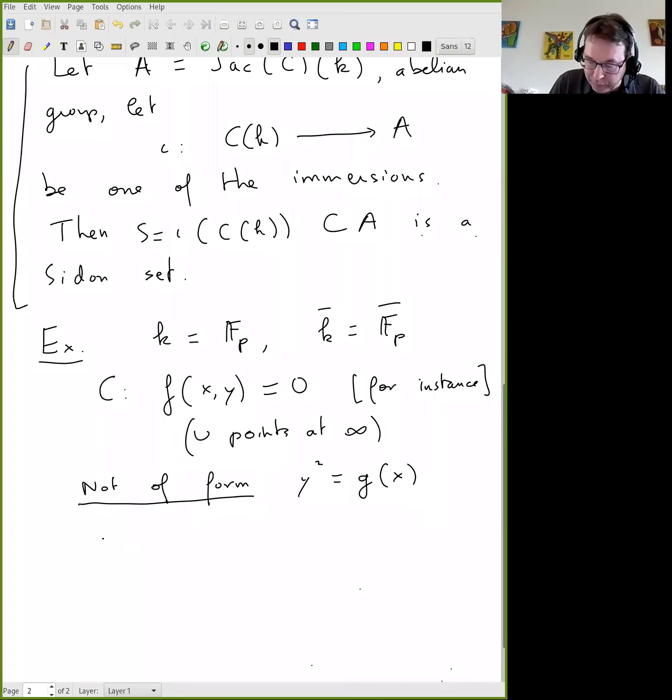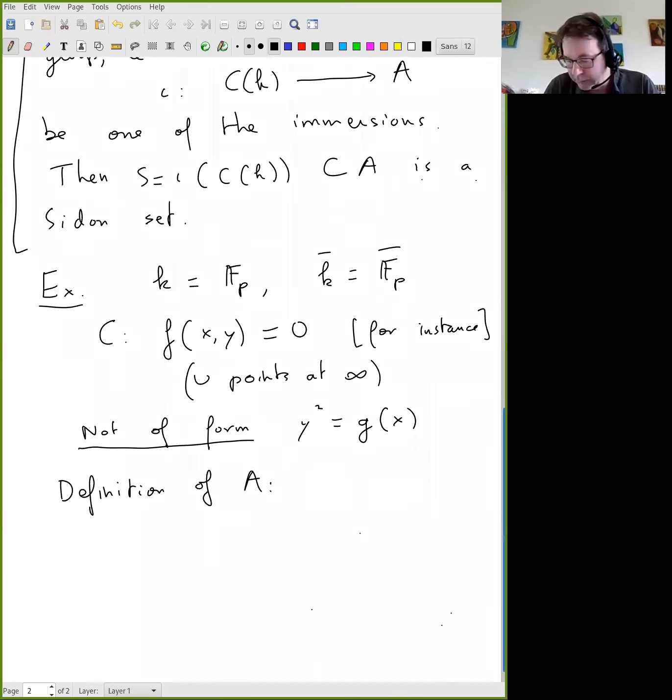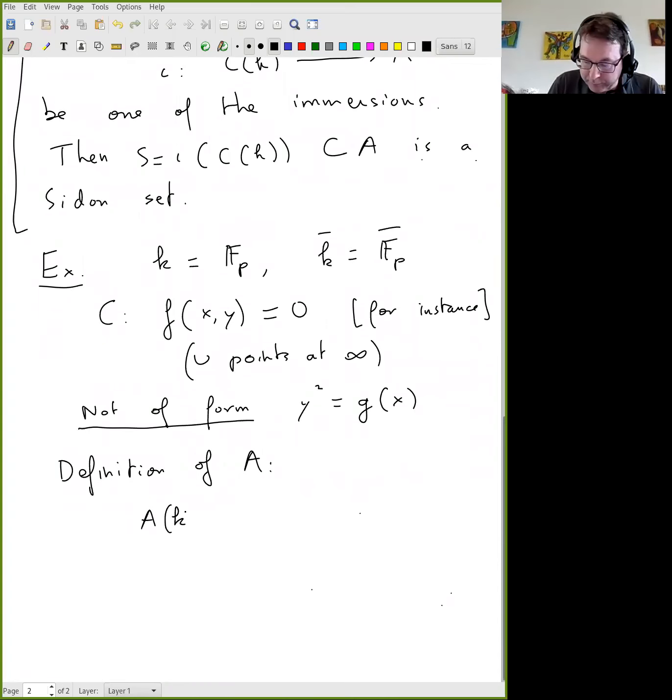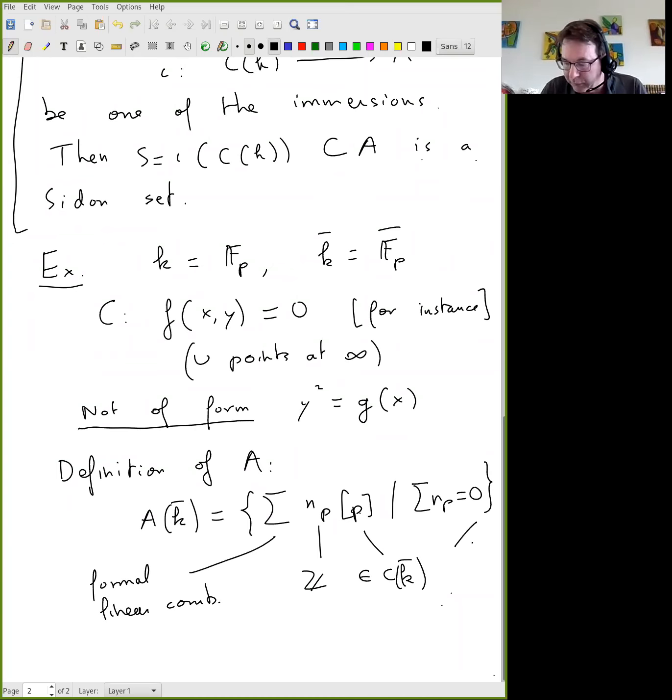This would be the hyperelliptic case. Then I'm going to try and define what is A. In that case, it's some kind of class group. And first we define A of K bar. So kind of the points on the algebraic closure. This would be all the formal combination of weights times points on the curve.